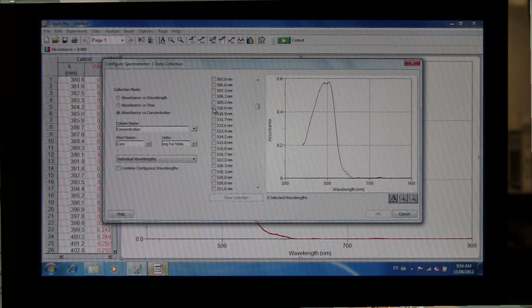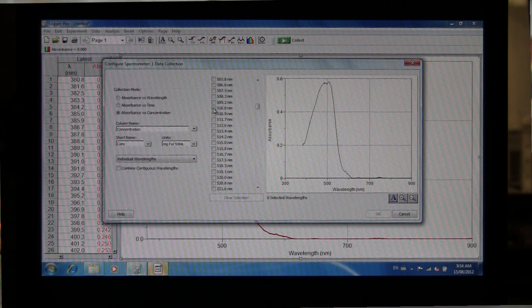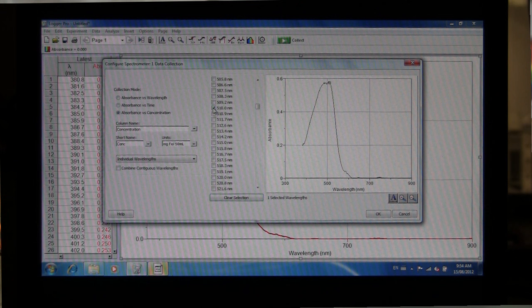You're going to select the maximum wavelength that you generated from your absorption spectrum. Ideally for this experiment you're expecting a maximum wavelength around 510 nanometers. You'll check that off and then click OK.